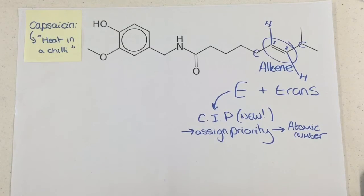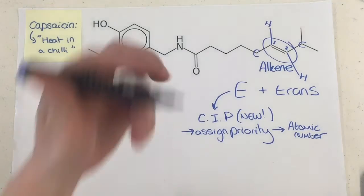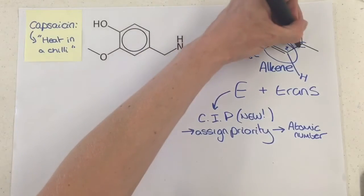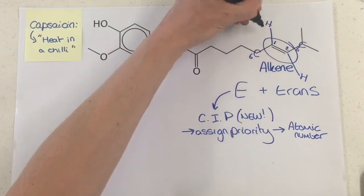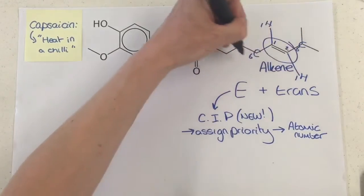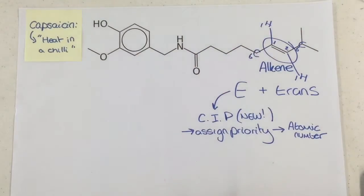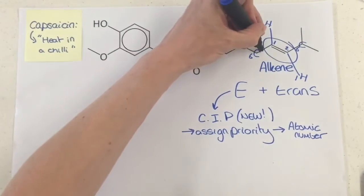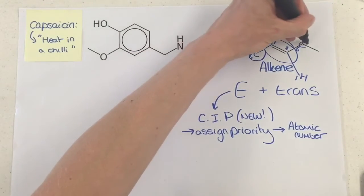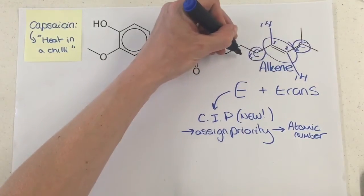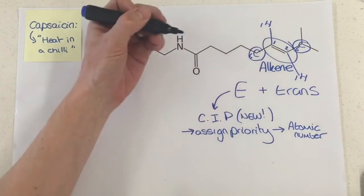The bigger the number — so for example here, carbon is 6 and hydrogen is 1, not carbon-12 for instance — means the carbon is higher priority. So you look at the positioning of the two high priority groups, and they are across from each other, so it's E.